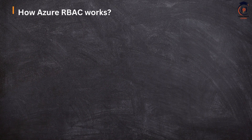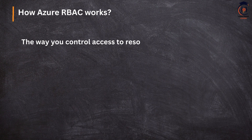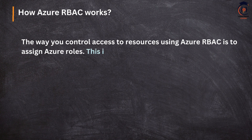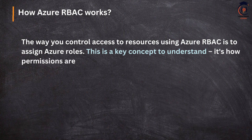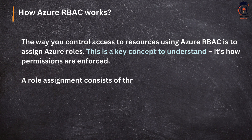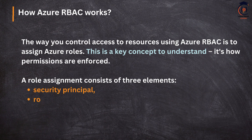The way you control access to resources using Azure RBAC is by assigning Azure roles — that is how permissions are enforced. This is a key concept you need to understand. A role assignment consists of three elements: a security principle, a role definition, and a scope.